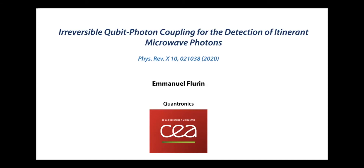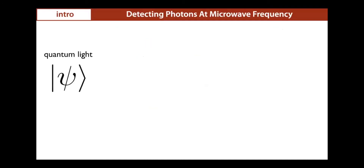Thank you for the invitation. That's actually my first virtual seminar, so I'm very glad to experience this. Today I'm going to talk about efficient detection of single microwave photons. We do that by engineering an irreversible coupling between a qubit and an incoming photon. I will describe this in the first part of my talk. In the second part, I will present our latest results about detecting spins that are emitting photons using this microwave photon detector, which I believe is of interest because it's quite similar to the axion search task in terms of resources.